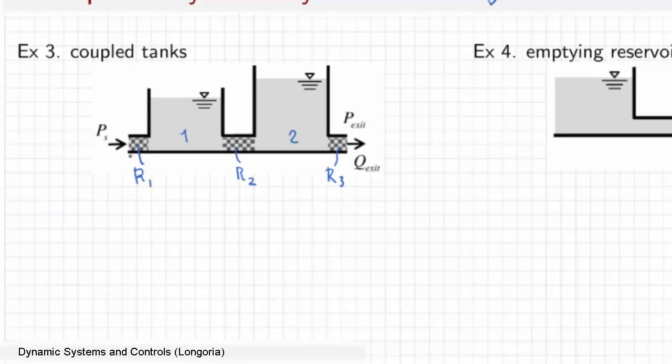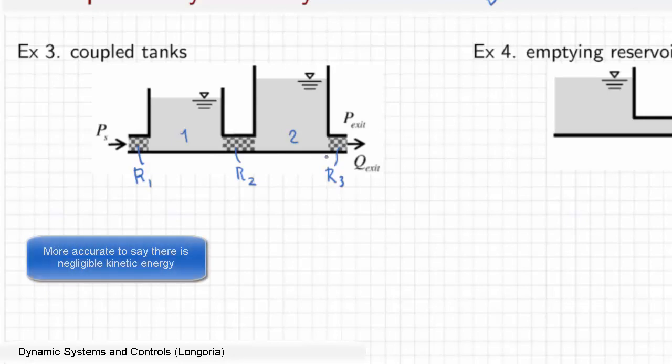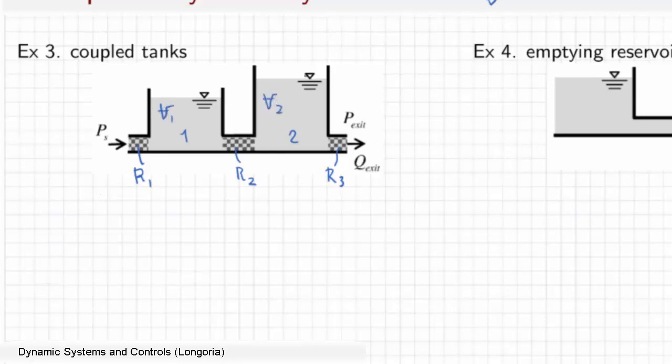There's no kinetic energy storage here. There's only potential energy storage, so the only possible dynamic states are the volume 1 and volume 2. So right away you can just focus on writing two ODEs. So at most you can have two states, V1 and V2.